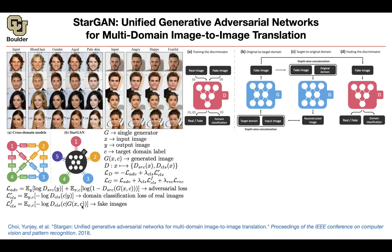You're going to say: I want to generate faces of angry men, and then the class should be angry men. The reconstruction loss is L1. In terms of the figure, you generate an image, give that generated image back to the generator to take you back to the original domain, and now you can compare X to X — apples to apples. These are some hyperparameters that you choose.